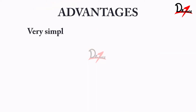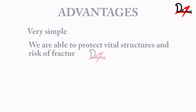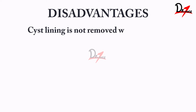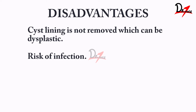It is a very simple procedure and we are saving the risk of damage to any vital structure. But the disadvantage is that we are leaving the cystic lining there, which can lead to neoplastic changes — and we are taking that risk. Also, there could be chances of infection, so we have to make sure that we keep changing the gauze at regular intervals and properly irrigate to prevent infection.